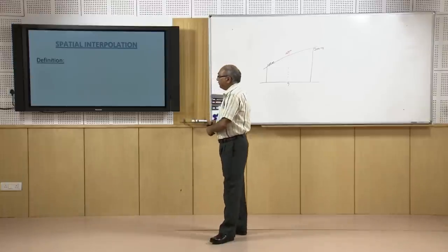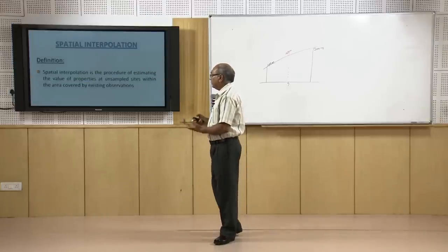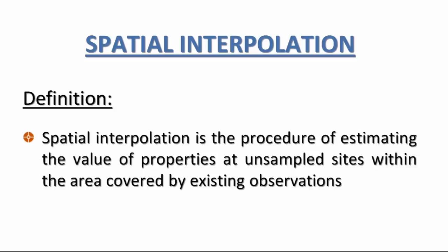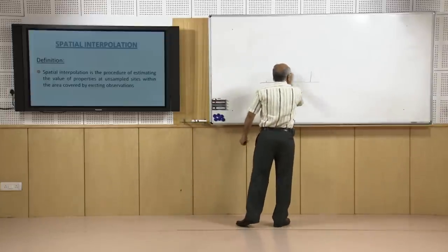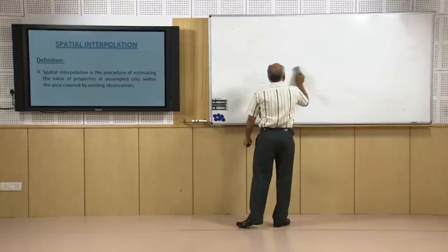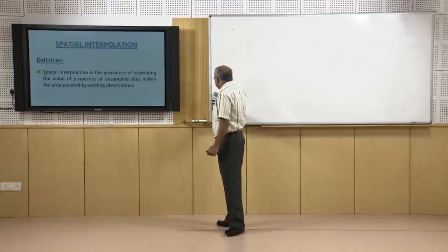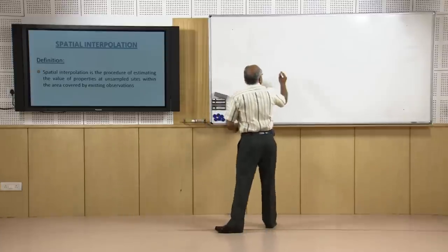The definition of spatial interpolation is the procedure of estimating values of properties — such as elevation, chemical properties, or groundwater level — at unsampled sites within the area covered by existing observations. When we go beyond existing observations we call it extrapolation, but within the observations it is called interpolation.